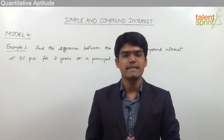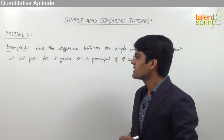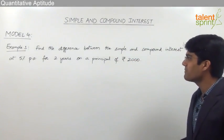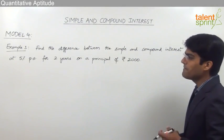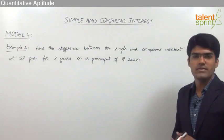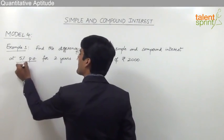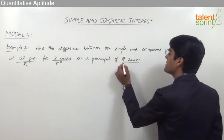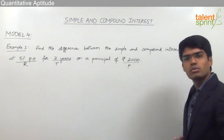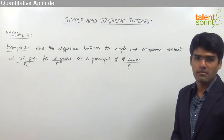Let us now take an example based on the concept of difference. The question is: find the difference between simple interest and compound interest at 5% per annum for 2 years on a principal of Rs. 2000. So the rate of interest is 5% per annum, time period is 2 years, and the principal amount is Rs. 2000. We are supposed to find out the difference between simple interest and compound interest.